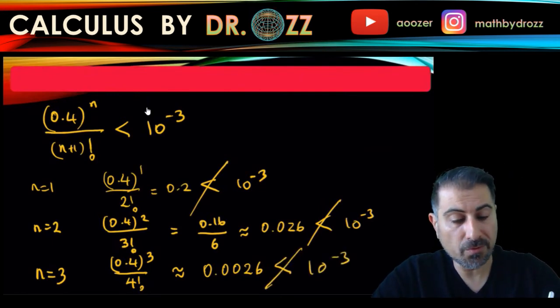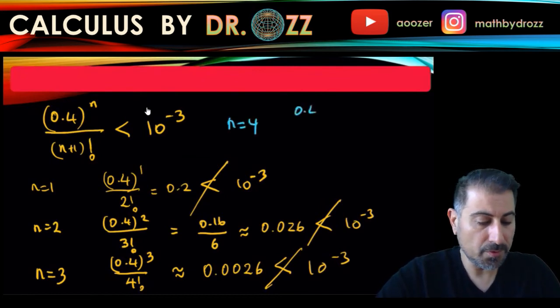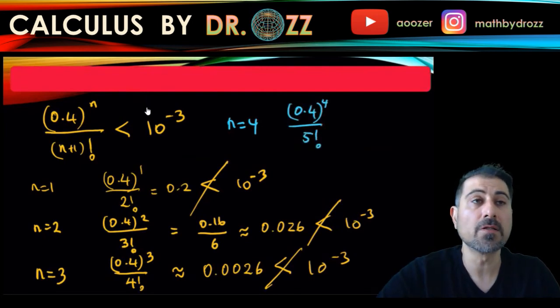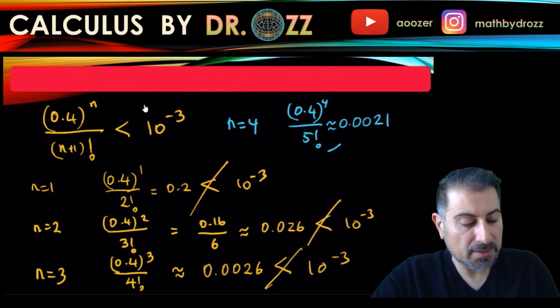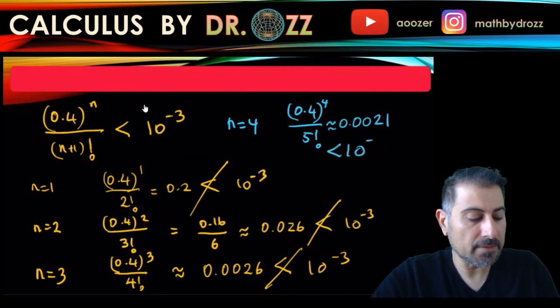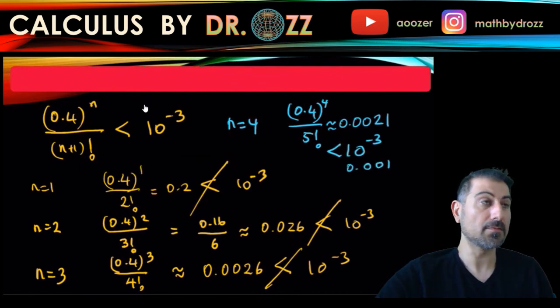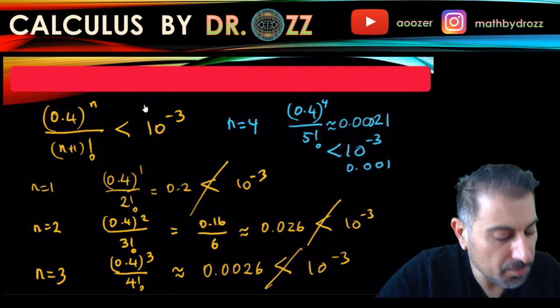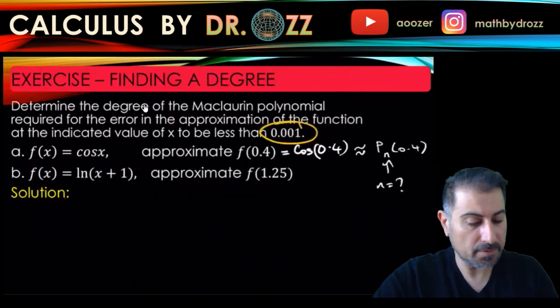I'm going to try n equals 4 here for the last time. I think n equals 4 must work. So you have 0.4 to the 4th divided by 5 factorial. All right, so this is what you get approximately. Now, good news is that this is already less than 10 to the minus 3, which is like 0.001. I think there's one more 0 here. I'm sorry. Check.